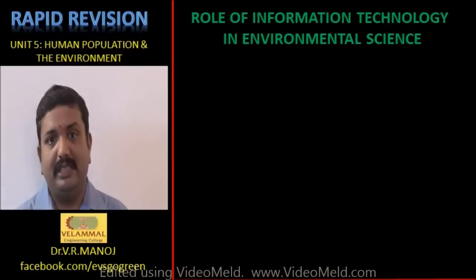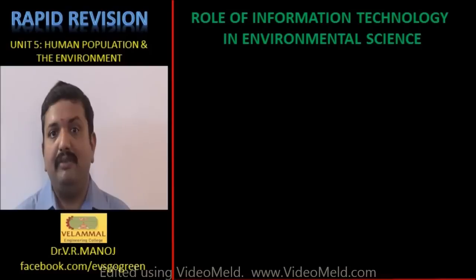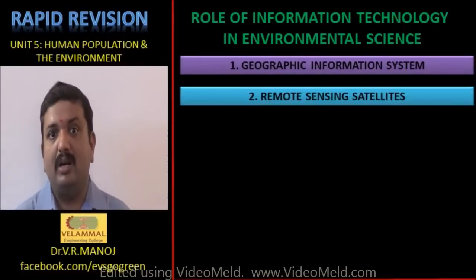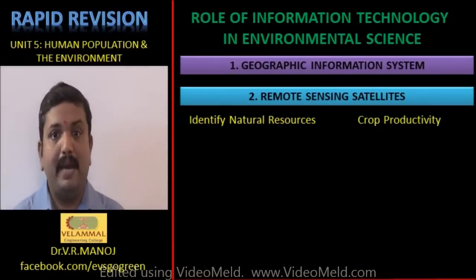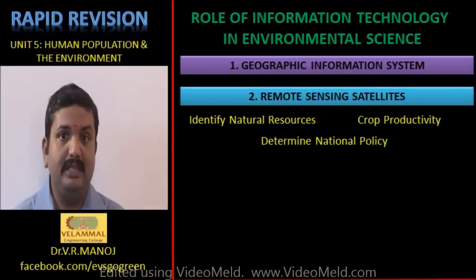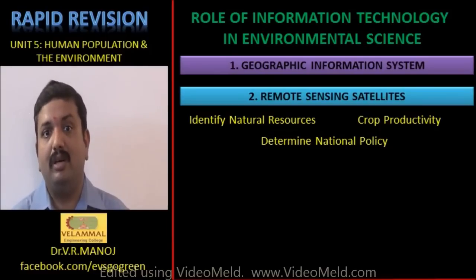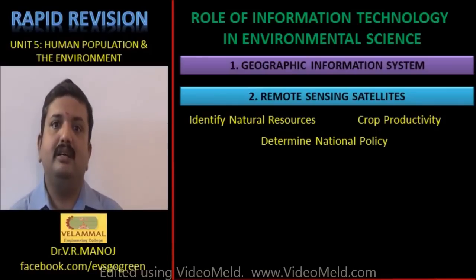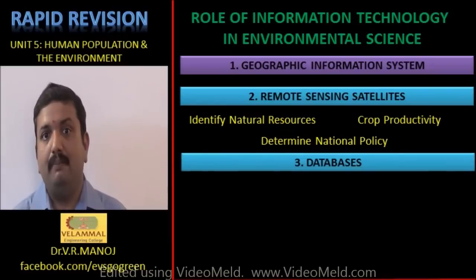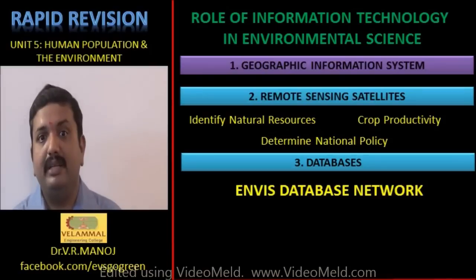Following HIV and AIDS, you have the role of information technology in environmental science. Here you must mention clearly the role of Geographic Information Systems and remote sensing satellites in identifying natural resources, crop productivity, and crop yield, and their impact in deciding issues of national policy — including national food policy, budget allocation for agriculture, etc.